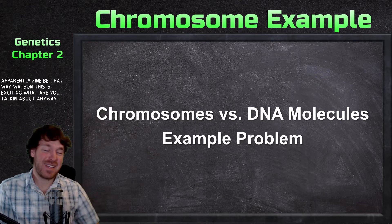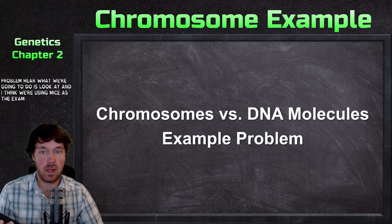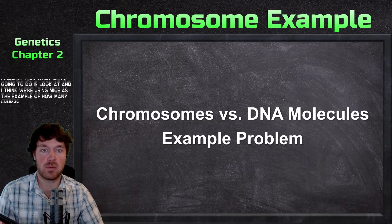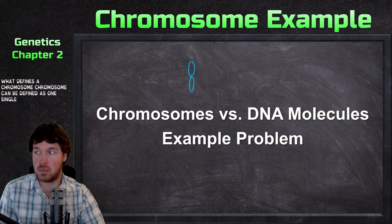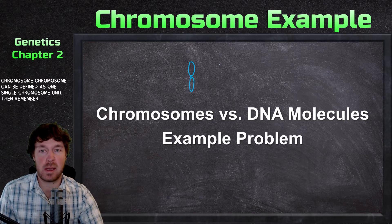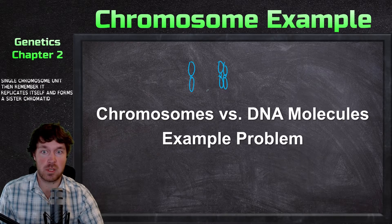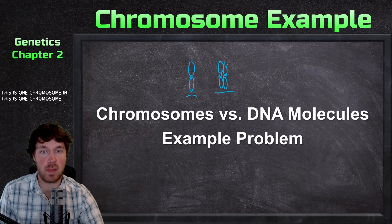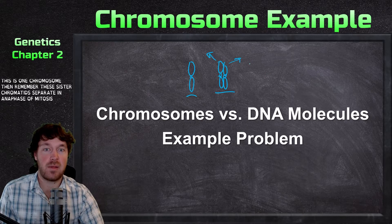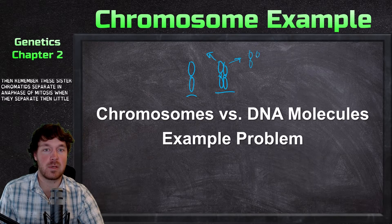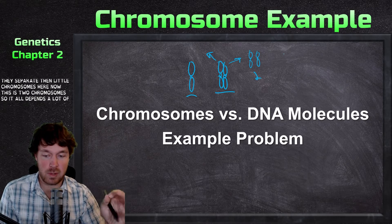In this little example problem, we're going to look at — using mice as the example — how many chromosomes. Remember what defines a chromosome: a chromosome can be defined as one single chromosome unit, then it replicates itself and forms a sister chromatid. So this is one chromosome, and this is one chromosome. Then remember these sister chromatids separate in anaphase of mitosis — when they separate, now this is two chromosomes.